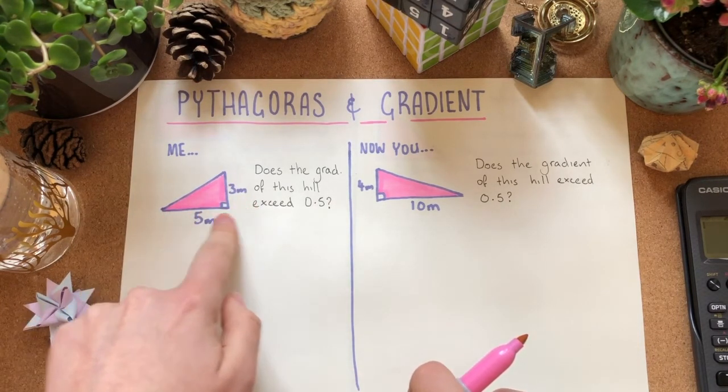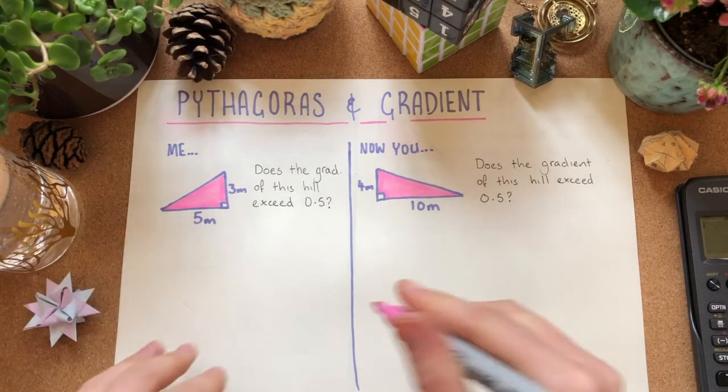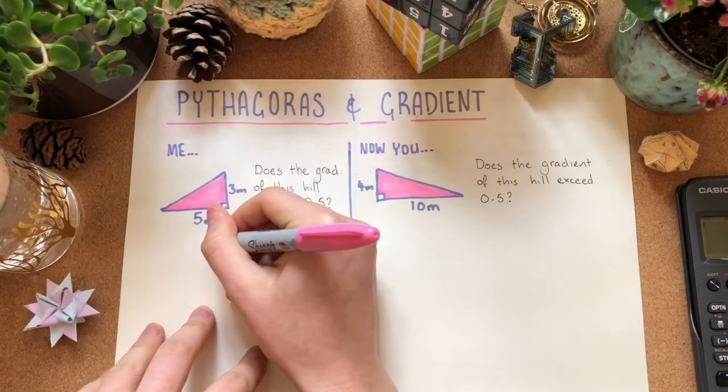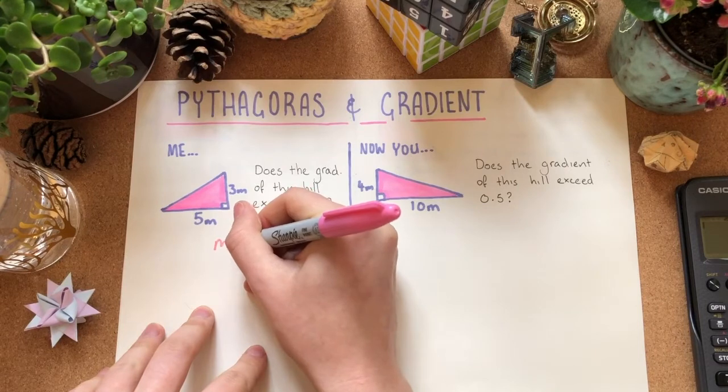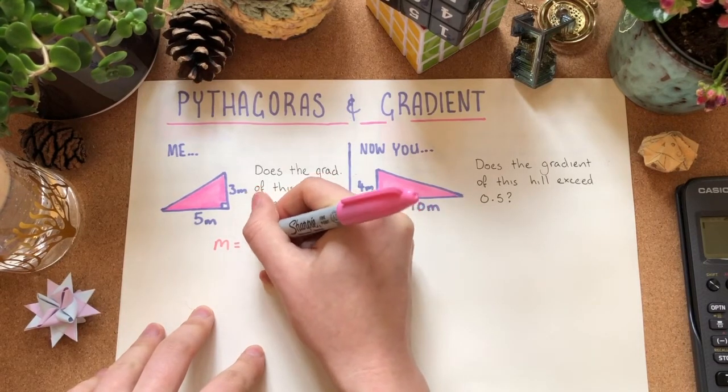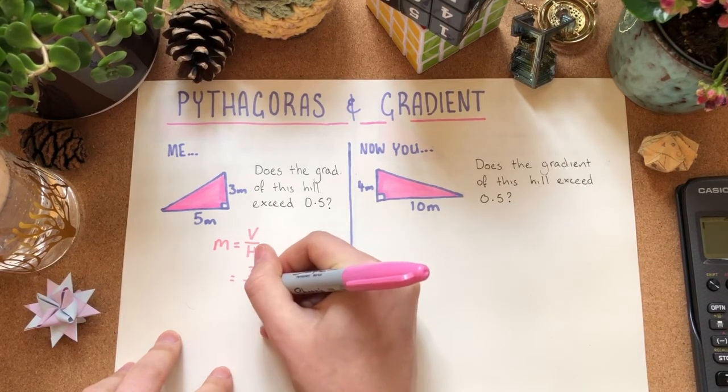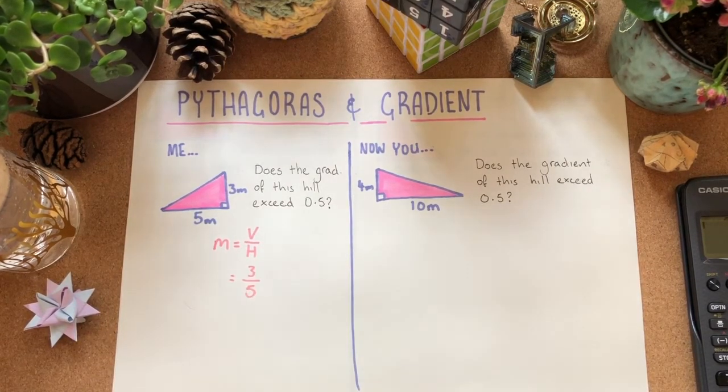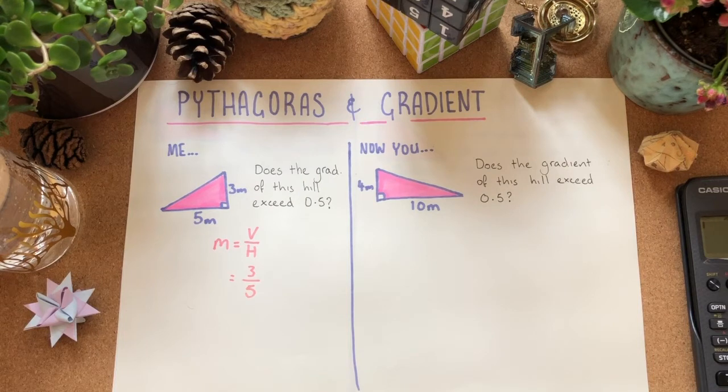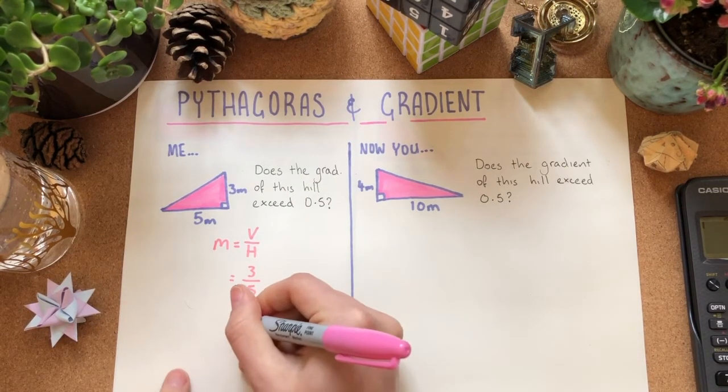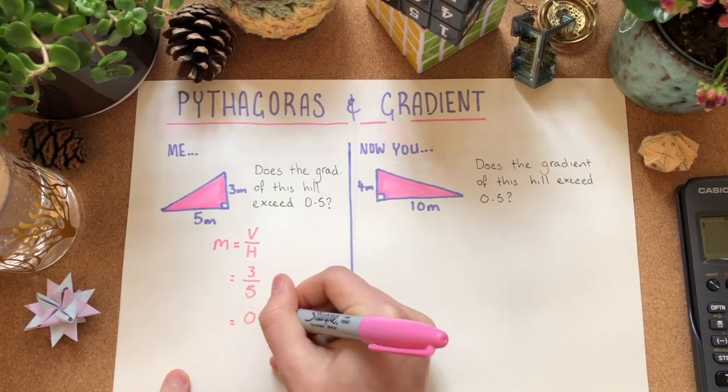We've got the vertical height, we've got the horizontal length so we can just jump straight into the gradient m is equal to v over h vertical over horizontal which in this case will be 3 over 5. I can use a calculator or I can use my knowledge of what one-fifth looks like and this will be 0.6.